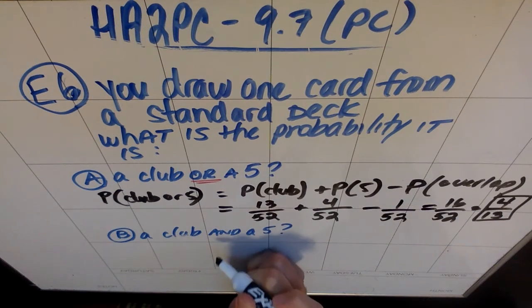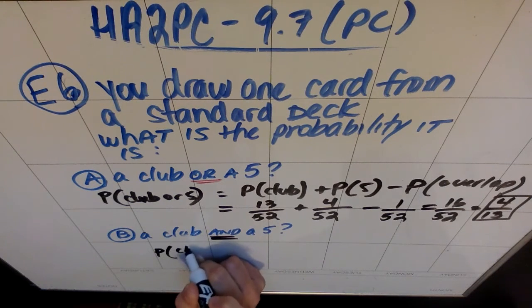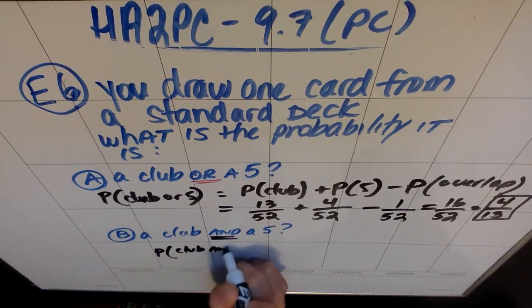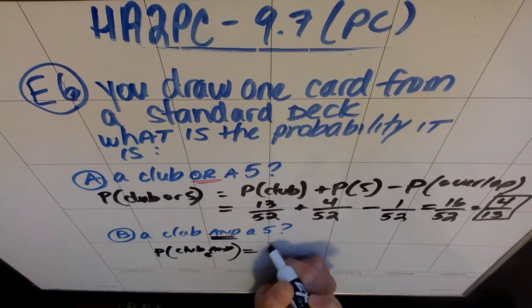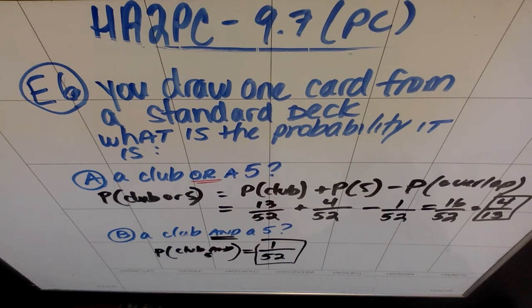Now, the probability that I draw a club and a 5, well, there's only one card that is both a club and a 5, and it is the 5 of clubs. So club and a 5 would be the one card that is the 5 of clubs. So see the difference that that one word makes? The probability of a 5 and a club versus the probability of a 5 of clubs.